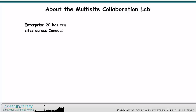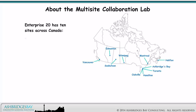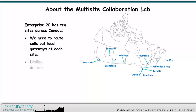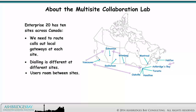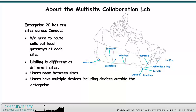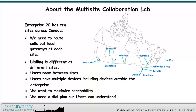Enterprise 20 has 10 sites across Canada. We need to route calls out local gateways at each site. Dialing is different at different sites. Users roam between sites. Users have multiple devices, including devices outside the Enterprise. We want to maximize reachability, and we need a dial plan our users can understand.